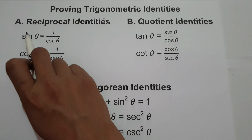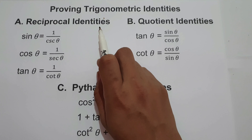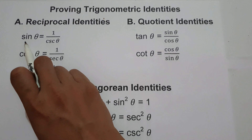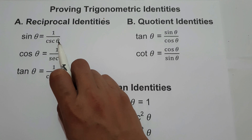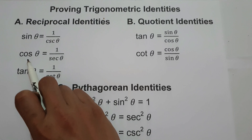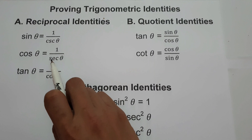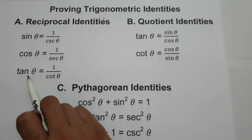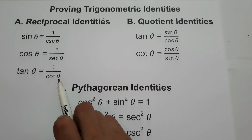The first one is the reciprocal identities. In reciprocal identities, we have sin theta is equal to 1 over cosecant theta, cos theta is equal to 1 over secant theta, and tan theta is equal to 1 over cotangent theta.